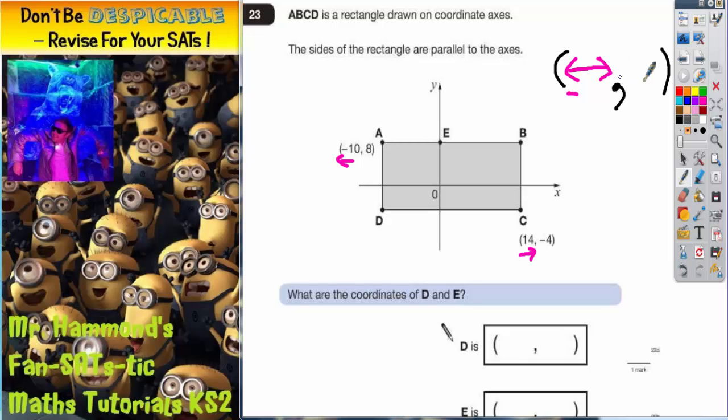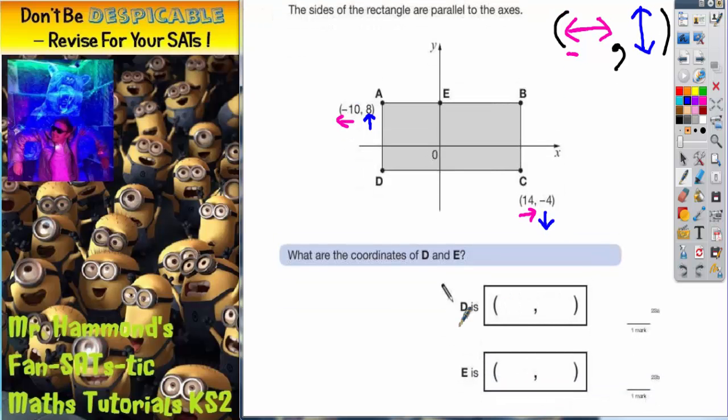The second number in any coordinate is whether you go up or down. So this 8 is above 0 so we're going up. So this 8 is 8 up. And this negative 4 is below 0, so from 0 we're going negative 4 down. Now what we need to do is now use that information to work out the coordinates of D and E.